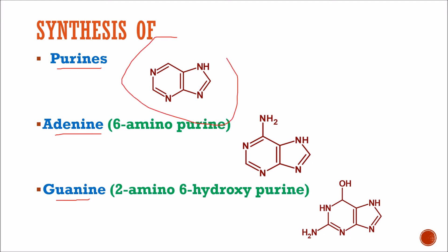Here is the structure of purine, and adenine and guanine are derivatives of this purine. Adenine is 6-aminopurine — at the sixth position, an amine group is present. 6-aminopurine is known as adenine, while 2-amino-6-hydroxypurine is known as guanine — at the second position an amine group is present and at the sixth position a hydroxyl group is present. So let us start with purines first.